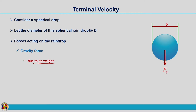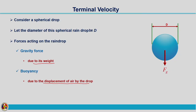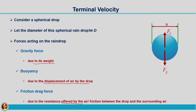The second force is buoyancy — buoyant force. Buoyant force is due to the displacement of air by the drop. As the raindrop is moving within the fluid — here in this case it is air — the amount of air displaced by the raindrop is represented as the buoyancy force. That will be acting in the upward direction. So gravity force acts downward and buoyant force acts upward. The third one is the frictional drag force. Drag force is due to the resistance offered by the air, or friction between the drop and the surrounding air. This drag force is also acting in the upward direction.